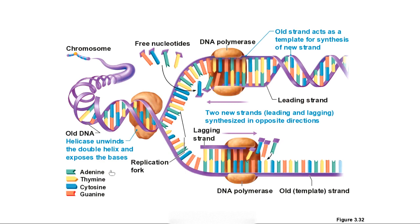The bases are adenine, thymine, cytosine, and guanine — A, T, C, G. DNA polymerase unzips the cell. Certain bases match with certain others: T pairs with A, C pairs with G. When the strand unzips, each base finds its complementary partner. Each of these is a mirror image of the other, and once complete you have two complete new strands of DNA.